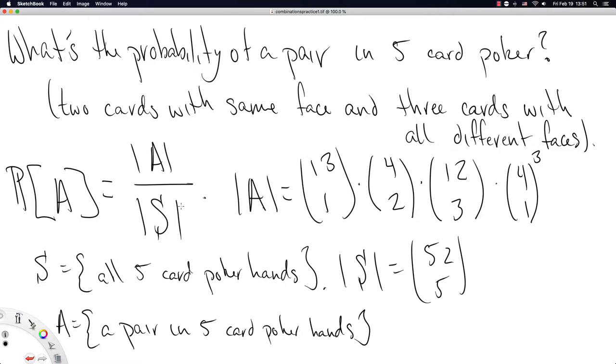That was our first example. The trickiest part is recognizing you first need to specify the face of the pair you're going to get. Once you specify the face, there are four of those cards available and you want two of them.